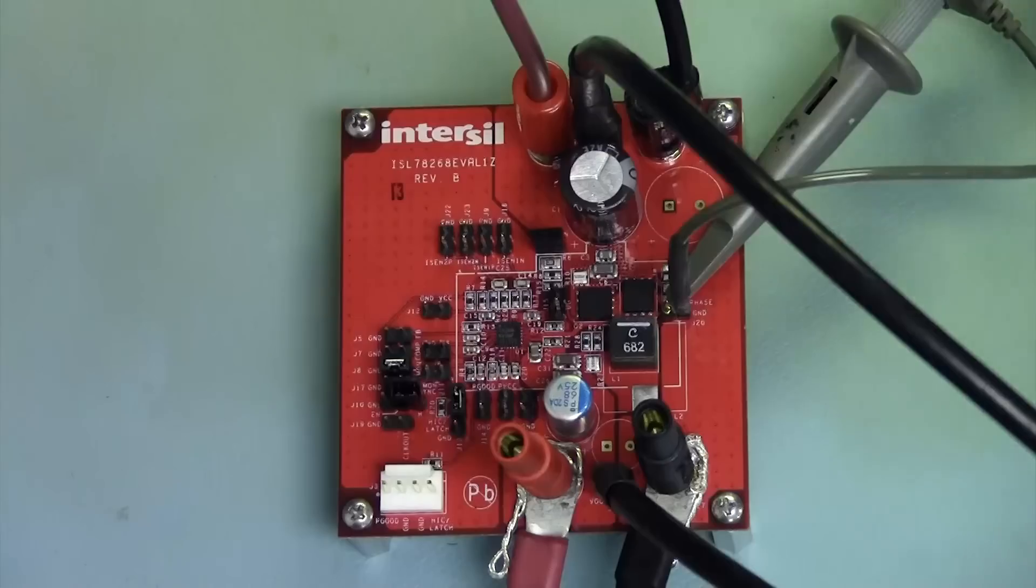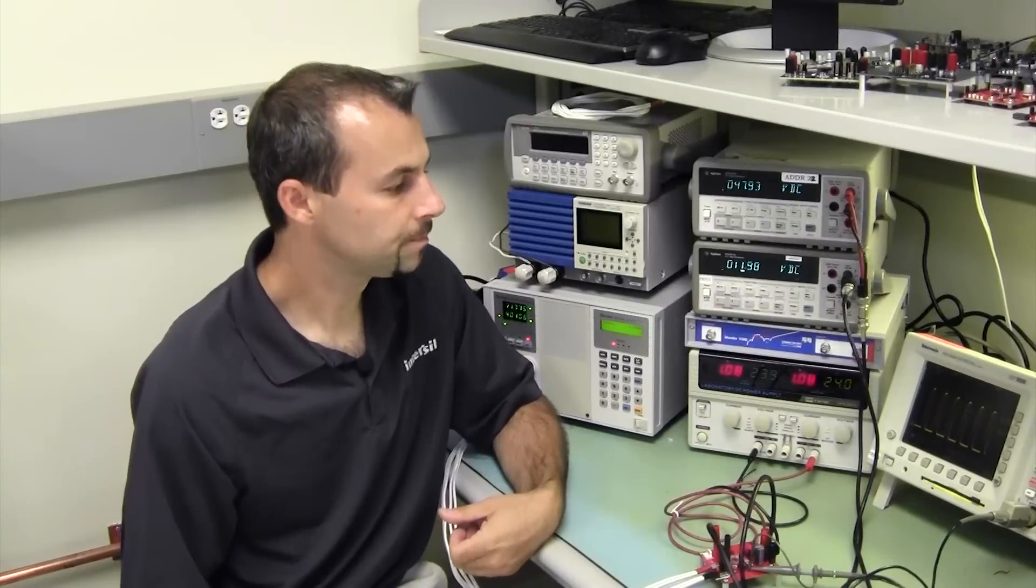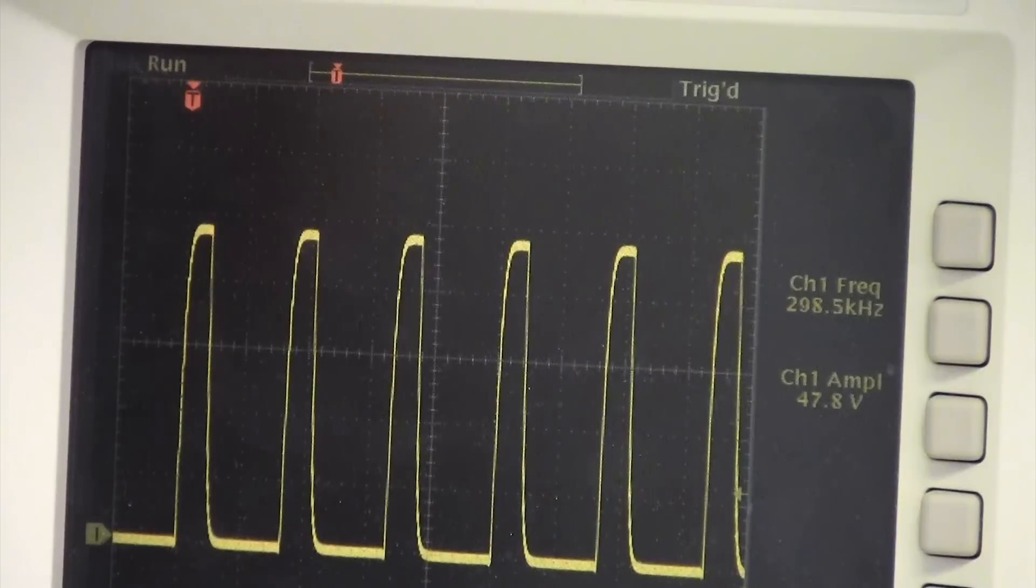I also have put an oscilloscope probe on the phase node so that we can see the switching action. If we look at the oscilloscope, we see that we're switching at 300 kilohertz, which is the default. And the phase node is going between ground and Vin at 48 volts, as we'd expect.